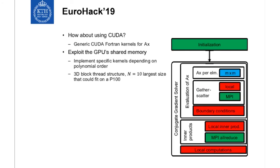We started to think this was a good way forward: keep the bulk of the application in OpenACC, avoid dealing with many small kernels, and focus on tuning the MXM kernel, which is the key part of NEC. We did a lot of work using CUDA shared memory in CUDA Fortran. We ended up with very specific kernels for specific polynomial orders, but they turned out to work pretty well.